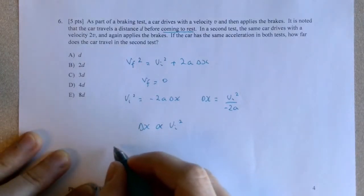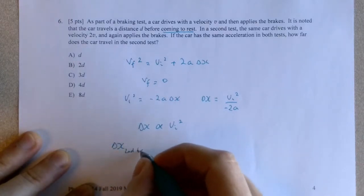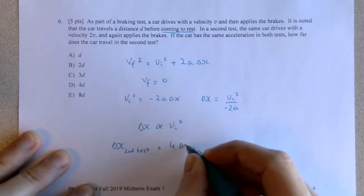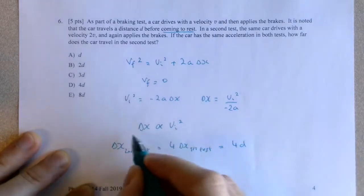So the delta X in the second test would have to be equal to 4 times the delta X in the first test, which is 4 times D because of this relationship here.